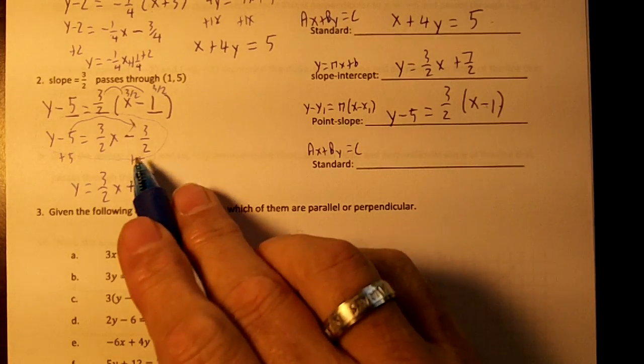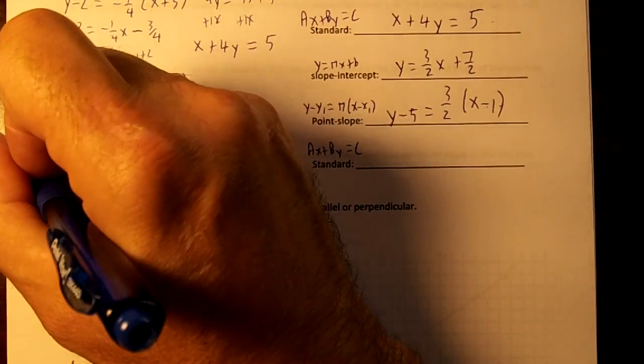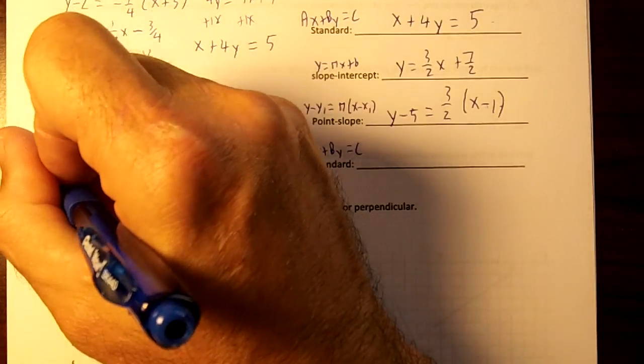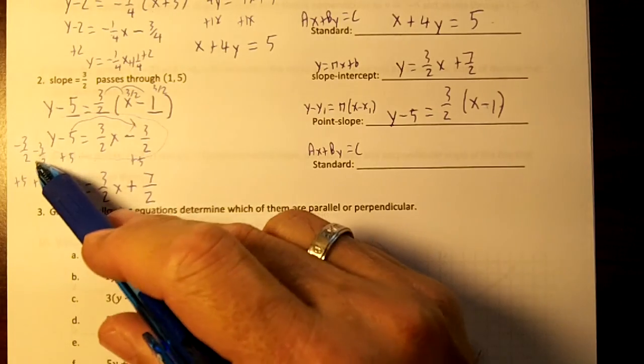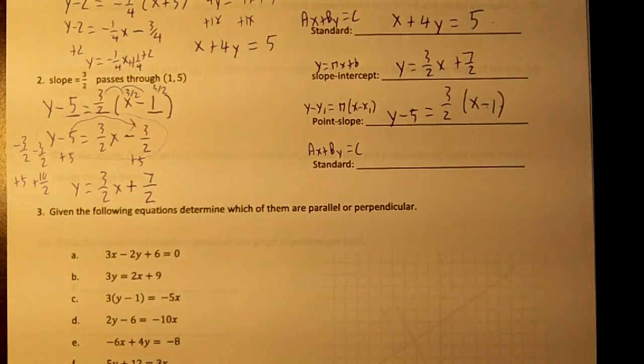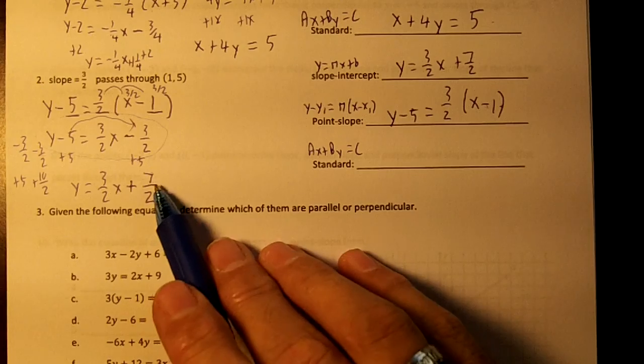If you remember on this, negative 3 over 2 plus 5 would be negative 3 over 2 plus 10 over 2, wouldn't it? Your common denominator is 2. 10 minus 3 is 7. That's where the 7 over 2 comes from, which would be 3.5.